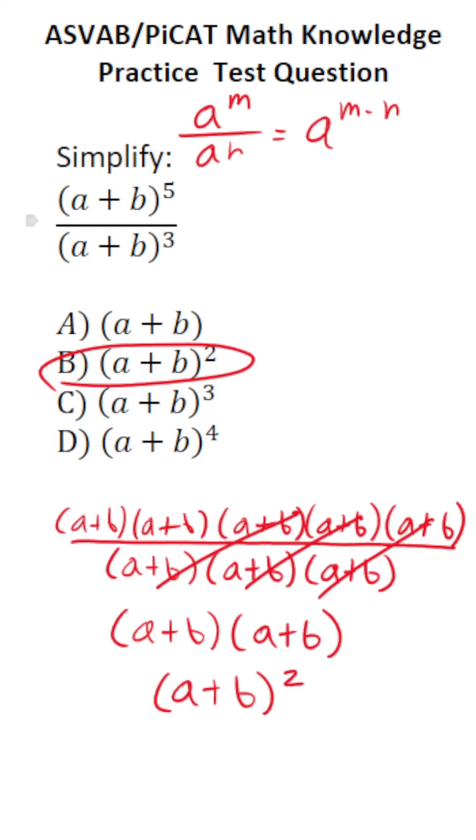In this case, we're going to treat (a + b) as a. So it looks like this: (a + b) to the fifth over (a + b) to the third is going to be equal to (a + b) to the (5 - 3), which is the same thing as (a + b) squared.